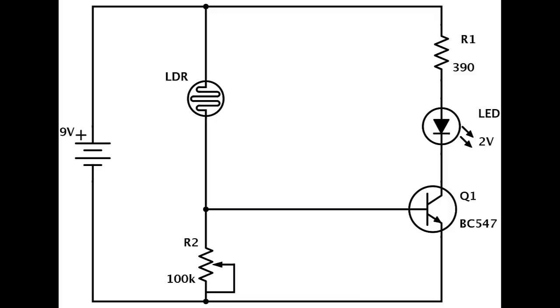But when it's light, the LDR has a low resistance. This makes the voltage at the base of the transistor higher, high enough to turn the transistor on.